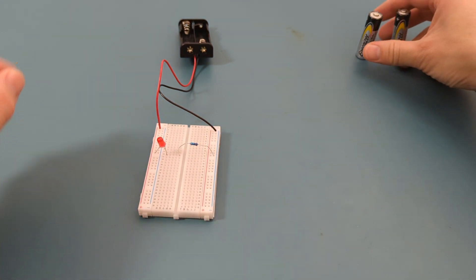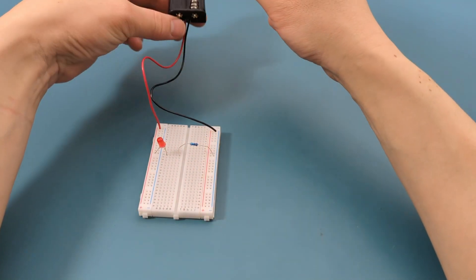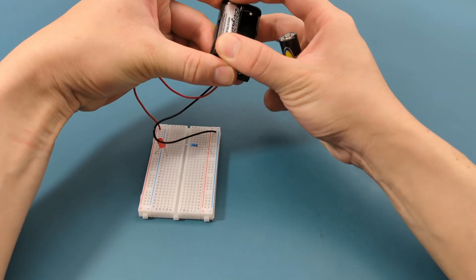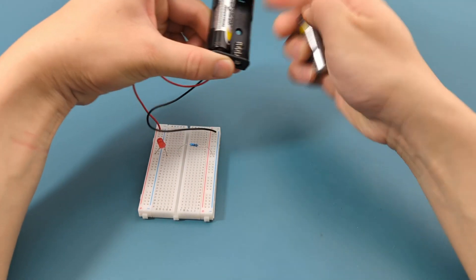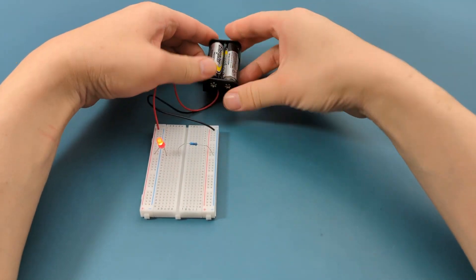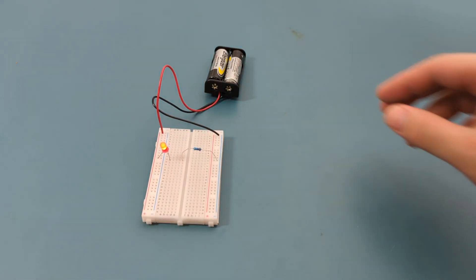Let's insert the batteries to the battery holder. The LED lights up. That's your basic circuit. Pretty neat, right?